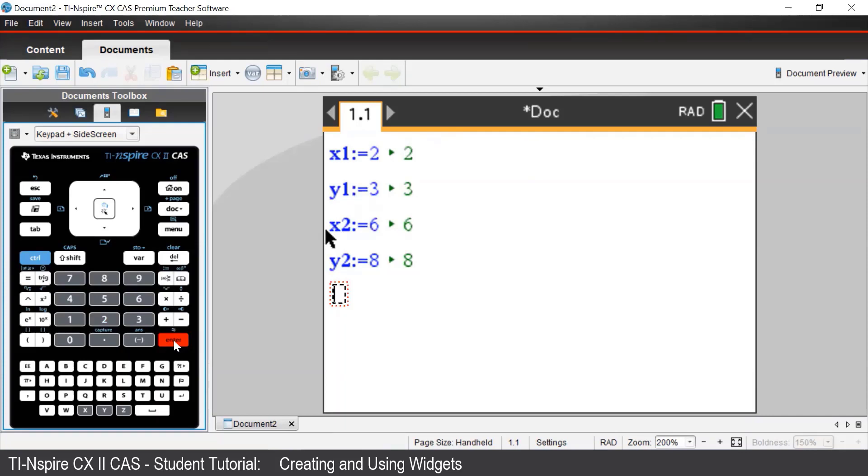Suppose we want to calculate the gradient. We can now enter our defined variables into the gradient formula. So we can access our variables by pressing the var button and now we can enter in y2 minus y1 divided by x2 minus x1.